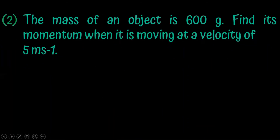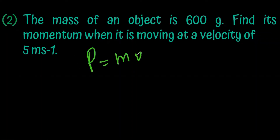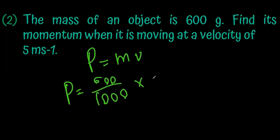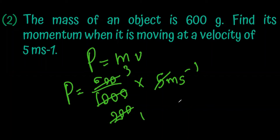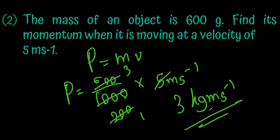The mass of an object is 600 grams and find its momentum when it is moving at a velocity of 5 meters per second. We need to express the mass in kilograms always — we can't put it as grams. Using p equals mv, the momentum is 3 kilograms meters per second.